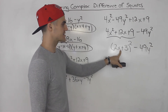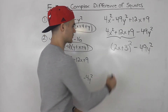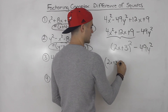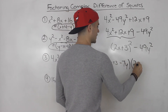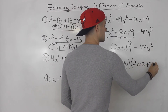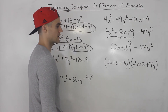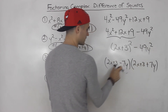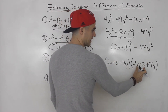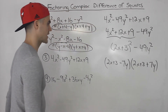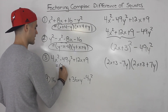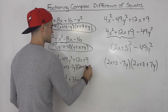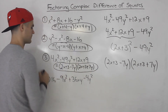From there it becomes the same thing: a squared minus b squared. The square root of 2x plus 3 squared is just 2x plus 3, and the square root of 49y squared is 7y. So we get 2x plus 3 minus 7y times 2x plus 3 plus 7y. That's your final answer — you can't factor any further.